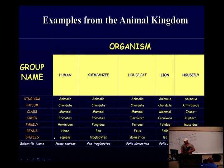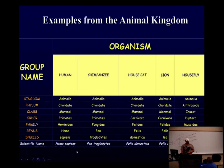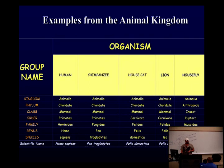Our genus is Homo, species is sapiens — Homo sapiens. The first letter of the genus is always capitalized, the first letter of the species is always lowercase, and it's always either underlined or in italics. Were there other species of humans before? Yes — Homo habilis, Homo erectus. A species is generally defined as a population that can interbreed and produce viable offspring. A lion and tiger can breed to make a liger, but then they're sterile, so they're considered unique species.